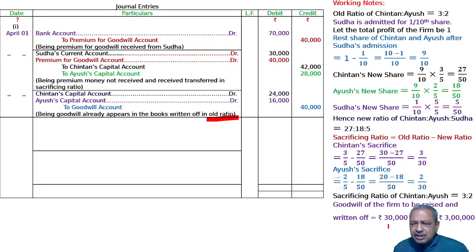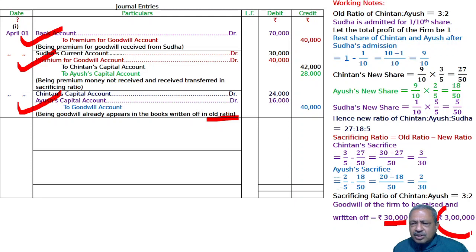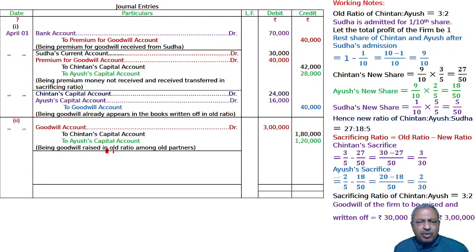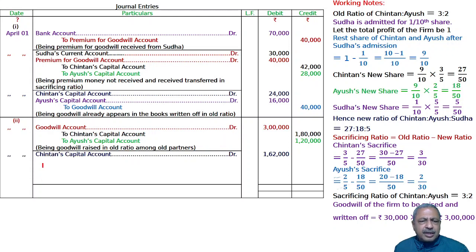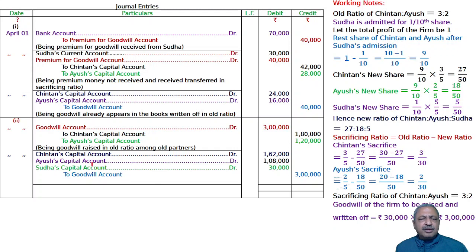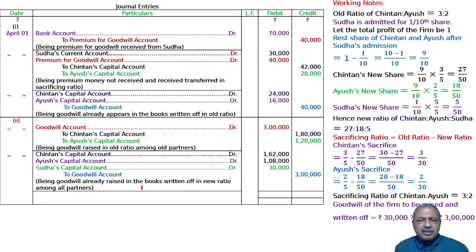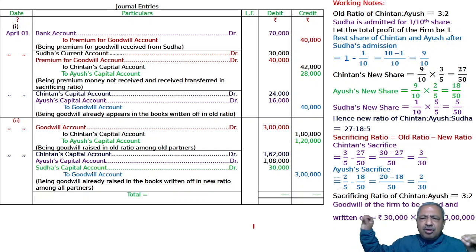Shudha's capital account is debited to goodwill for the write-up of 3 lakh. Since we found the new ratio of 27:18:5, write up the 3 lakh goodwill in the new ratio among all partners. Narration: being goodwill already raised in the books, written off in new ratio among all partners. Complete and total the journal. These are all about your answer.